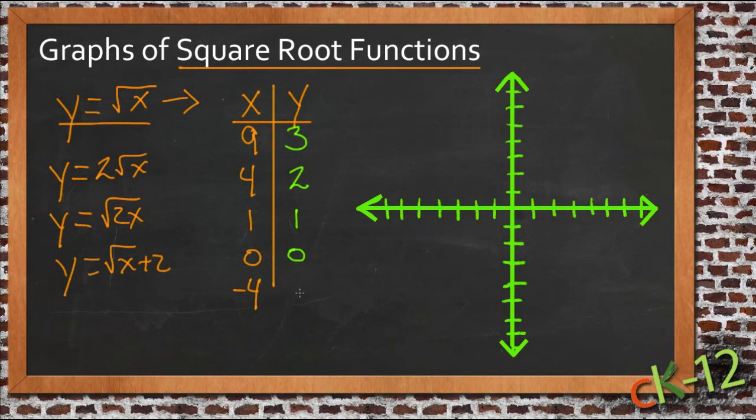And if x is negative 4, y can't be anything because there isn't a number that squares to be negative 4. So there's really no answer here for negative 4.